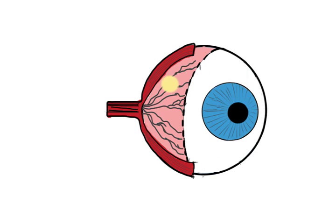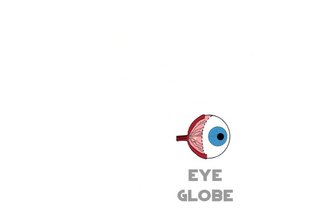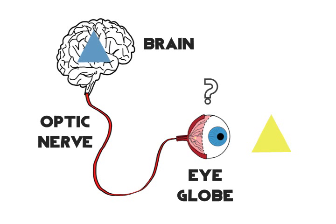The condition is usually attributed to a fault in the development of the retinal cones that perceive color in light and transmit that information to the optic nerve.